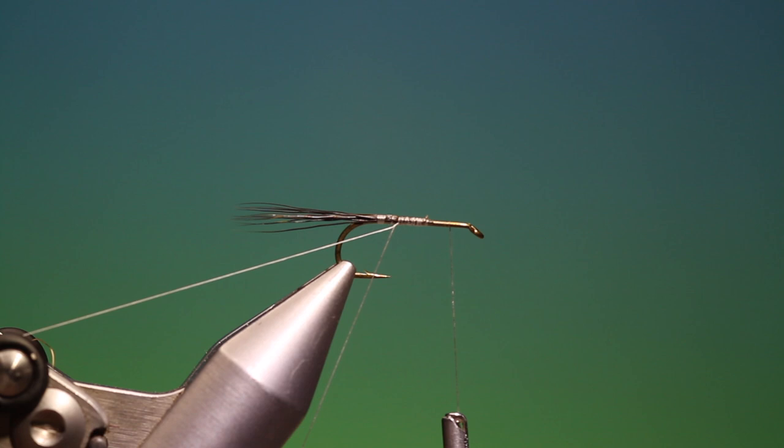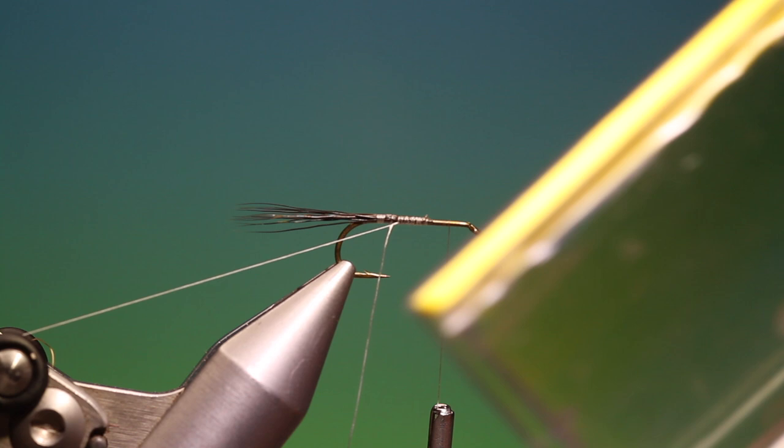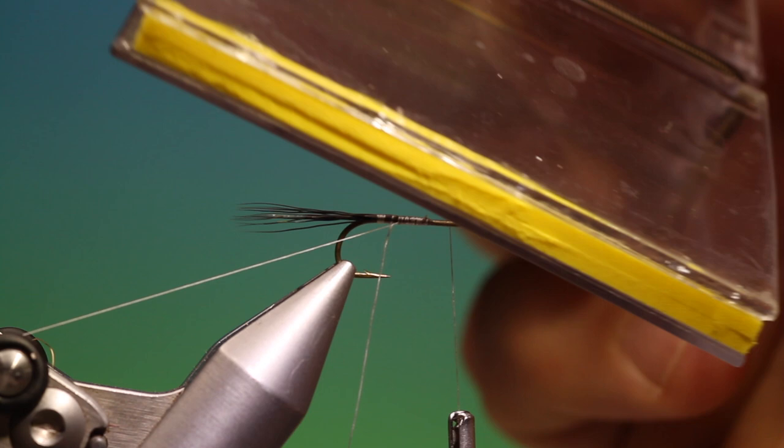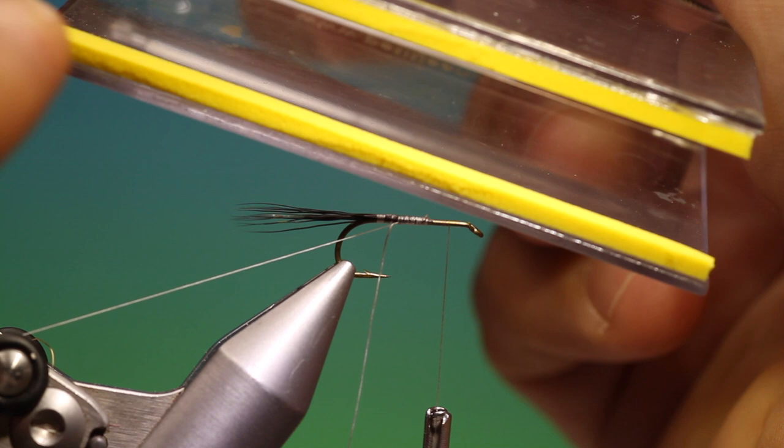And what I've done when I'm spinning deer hair in a loop—I've modified this Petitjean clip, Magic Clip, with two small strips of foam right on the edge. This holds the deer hair much better.